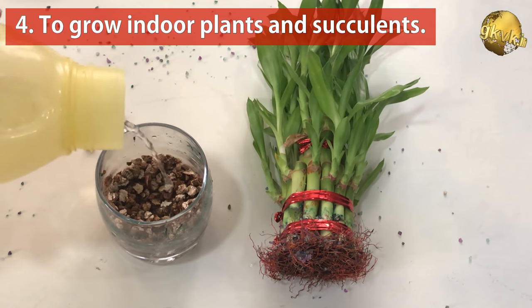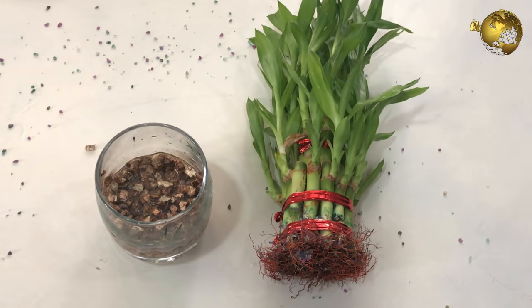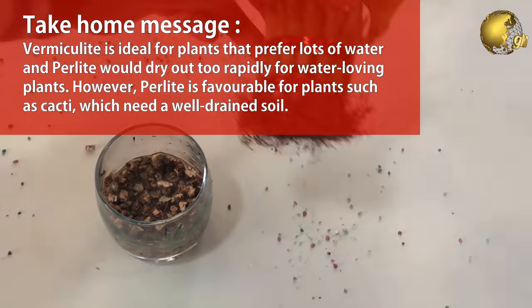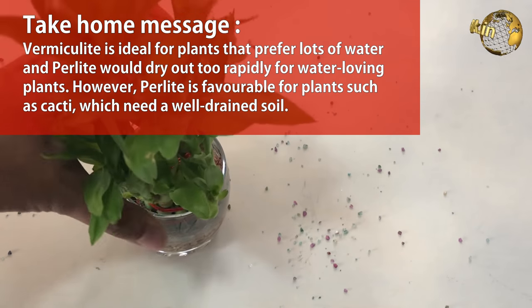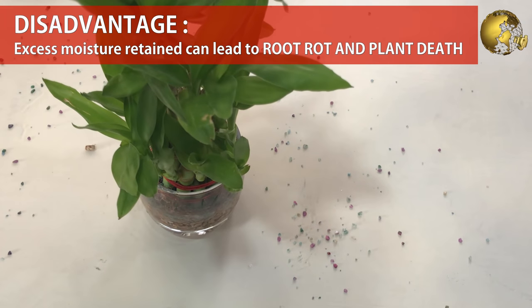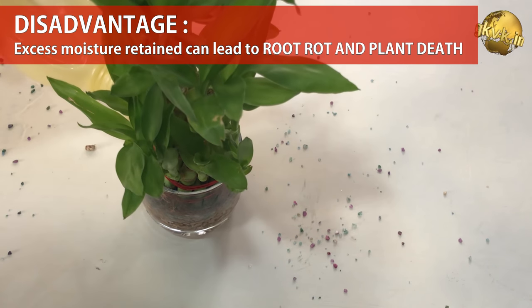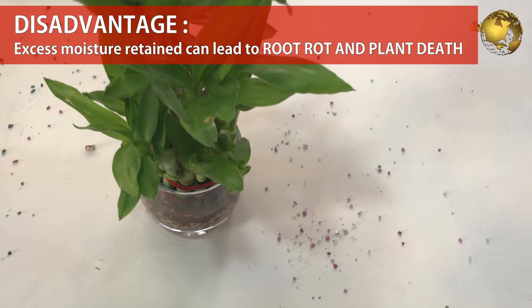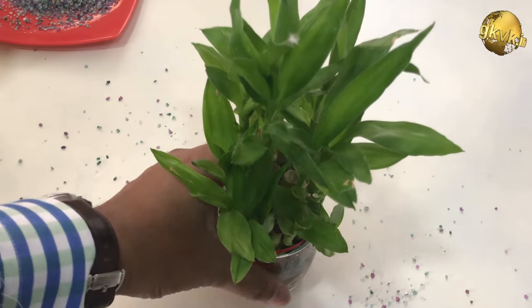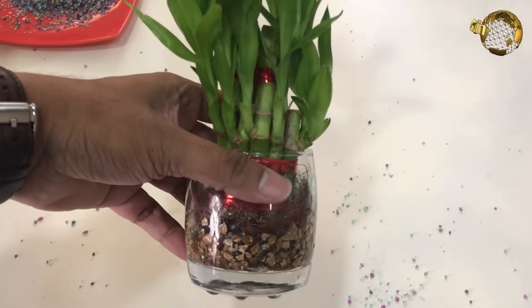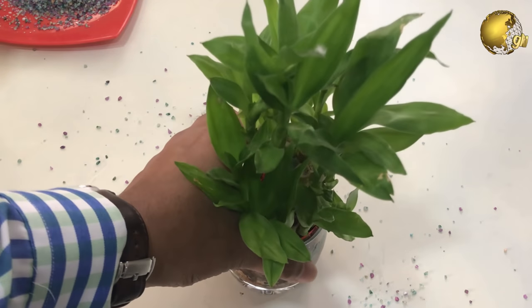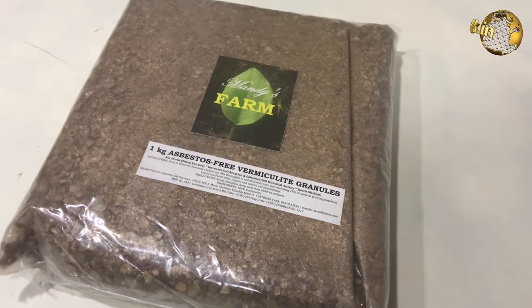The take-home message is: vermiculite is ideal for plants that prefer lots of water, and perlite would dry out too rapidly for water-loving plants. However, perlite is favorable for plants such as cacti, which need a well-drained soil. One bad effect of overuse of vermiculite is that the excessive moisture retained would lead to root rot or plant death. So in any general potting mix, use no more than 10% of these substances, especially vermiculite.